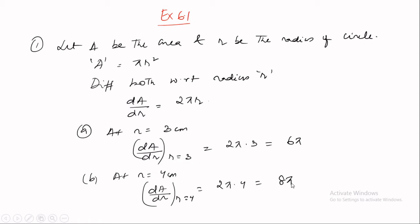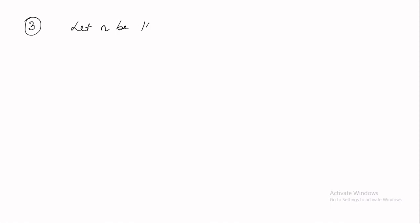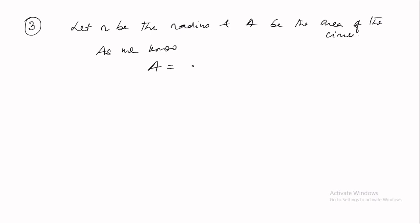You can pause the video and write it down. We have plenty more questions to go. Question 3: The radius of a circle is increasing uniformly at the rate of 3 cm per second — per second means with respect to time. Find the rate at which the area of the circle is increasing when the radius is 10 cm. Let r be the radius and A be the area of the circle.